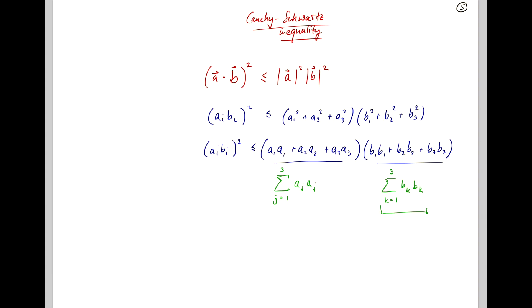But Einstein, with his summation convention, tells us that we don't actually need the summation sign, we just can write this as ajaj, bkbk. And so, aibi squared is just ajaj, bkbk. Or, even shorter, aibi squared is aj squared, bk squared. And this is the Cauchy-Schwarz inequality written in index notation, whereas we started up here with vector notation.